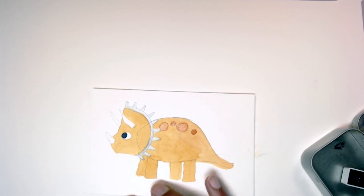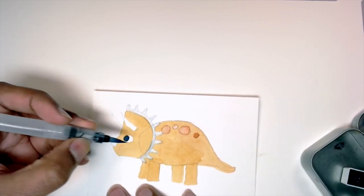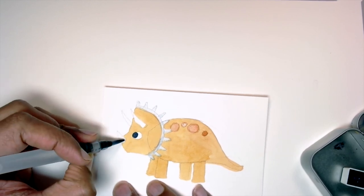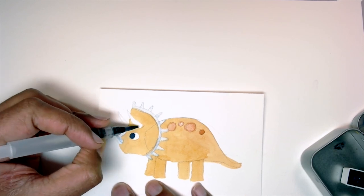And then for the horns, I'm actually, I want them to be white, so all I'm going to do is just get a little bit of that gray mixture and just do a little shadow on the horns. Like that.